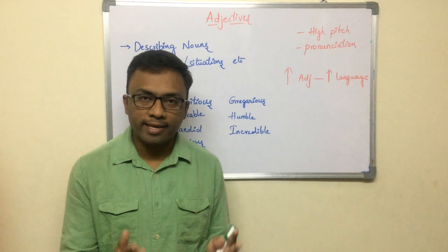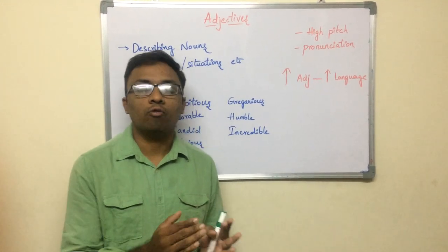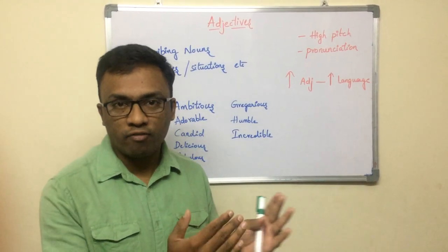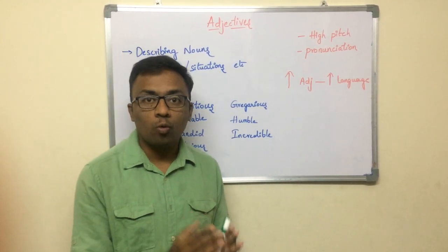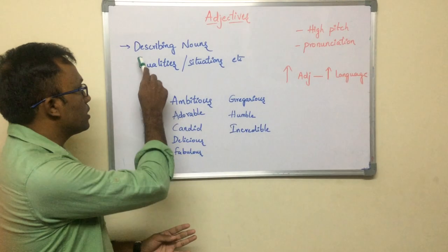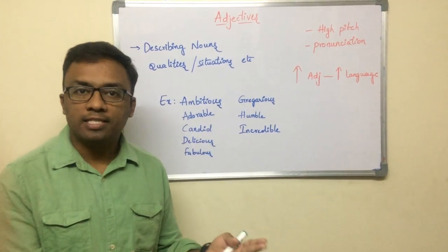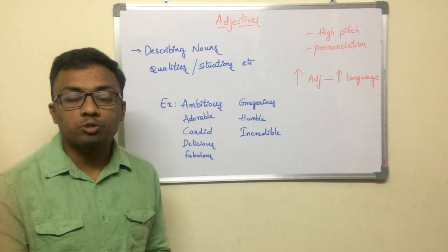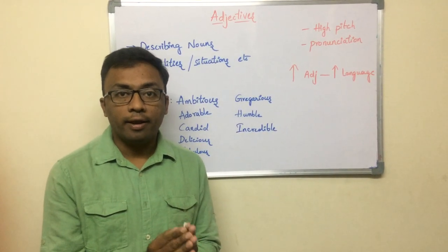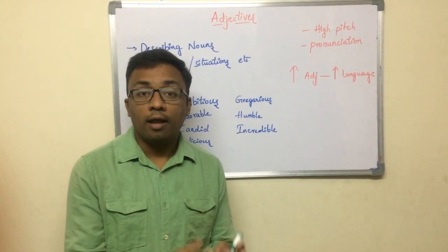In one line, I can say that the number of adjectives you know, the stronger your vocabulary is, and the stronger your English language is. So what are adjectives? In one line, you can define them as words that describe nouns. Adjectives describe nouns, describe qualities, describe situations, etc.